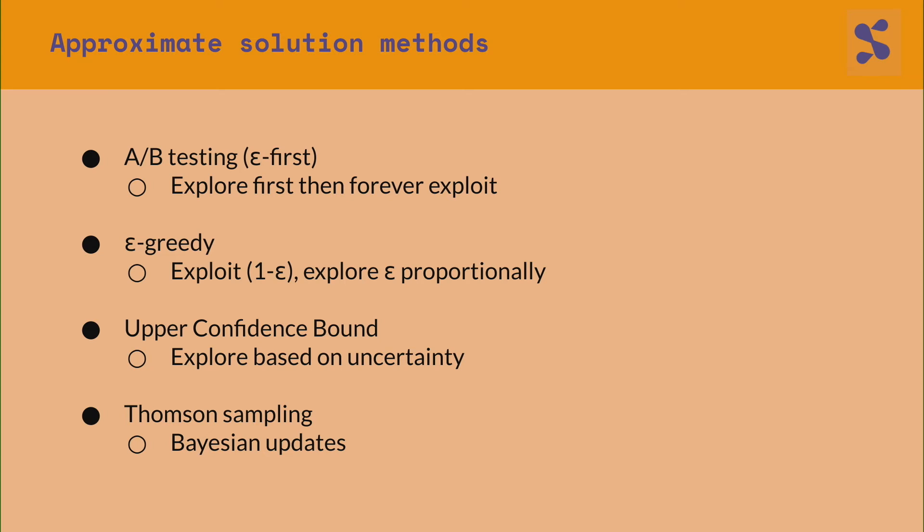Thompson sampling is my favourite one because it's Bayesian. You start with a prior over the arms, and after each trial you get an updated posterior, then you sample from the posterior to pick your choices. It's quite nice and works well in practice.